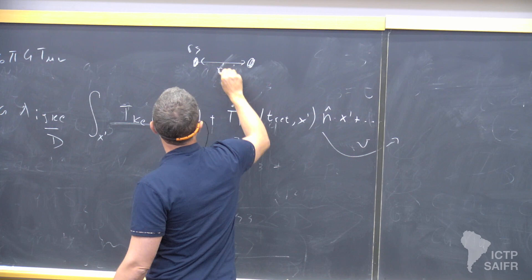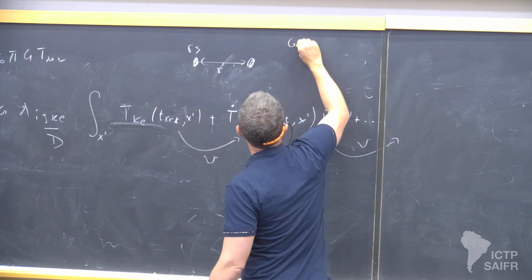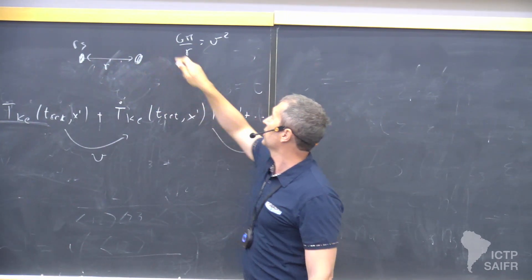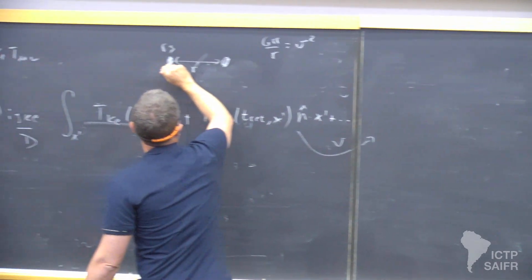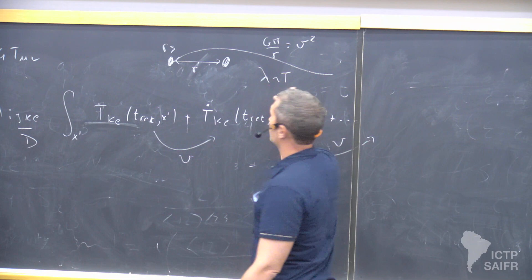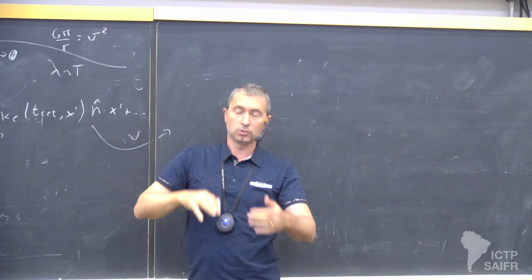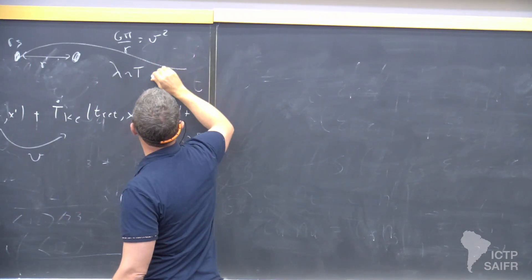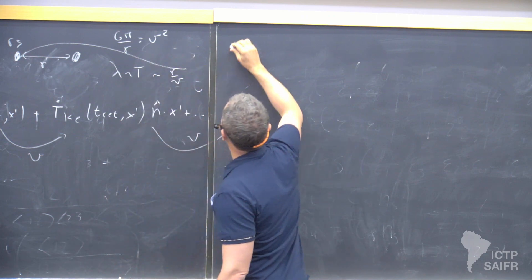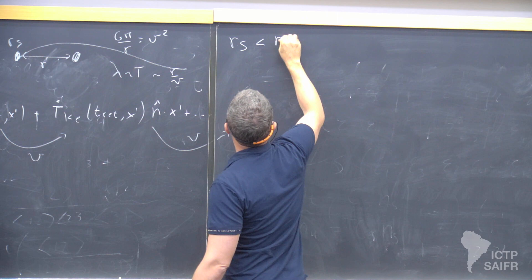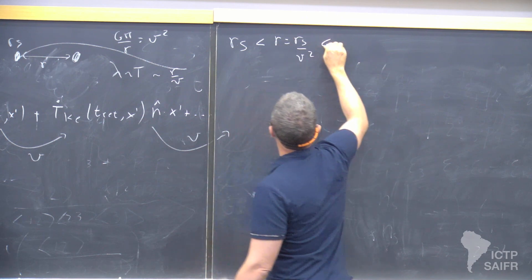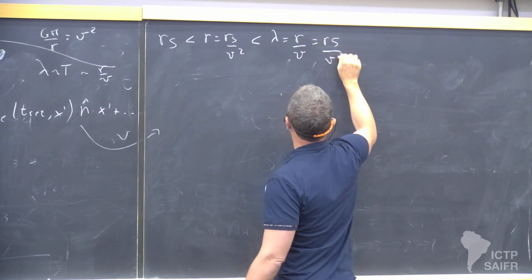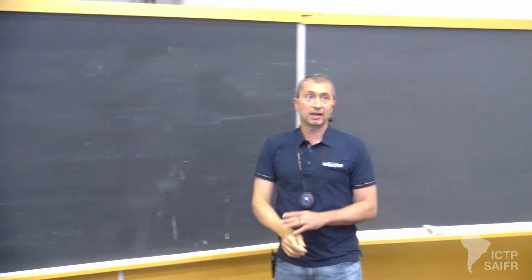And then we have the radius. We know that between GM and the radius, there is a v squared. So this radius is larger by v squared. And then we have lambda, the wavelength of the radiation, which by definition has to be equal to the period, the inverse of the frequency. And T must be equal to r over v. So v is our small parameter that allows you to move from one scale to the other.